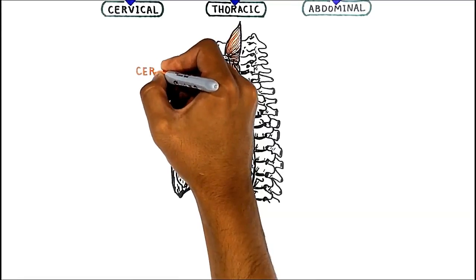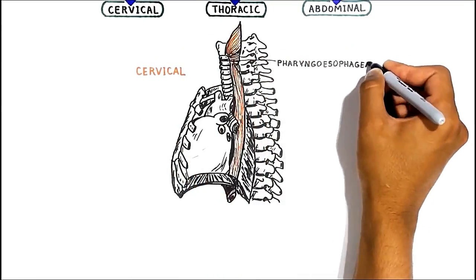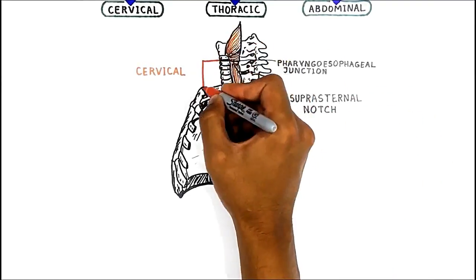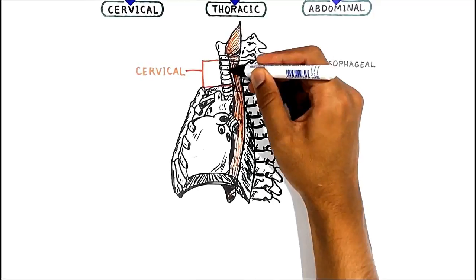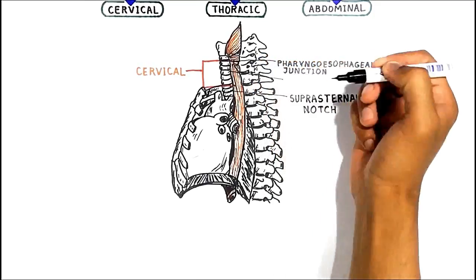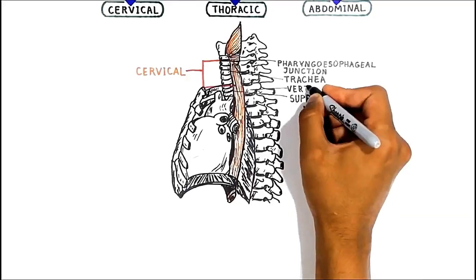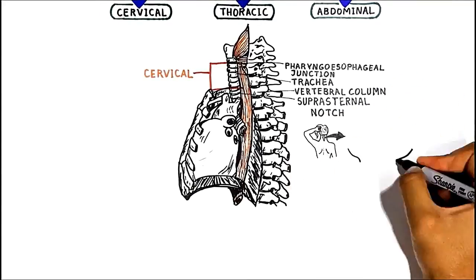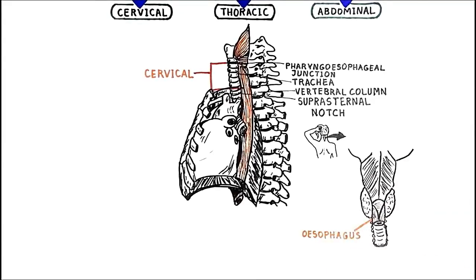The cervical esophagus extends from the pharyngoesophageal junction to the suprasternal notch and is about 4–5 cm long. At this level, the esophagus is bordered anteriorly by the trachea, posteriorly by the vertebral column, and laterally by the thyroid gland, which is better seen on a posterior view.